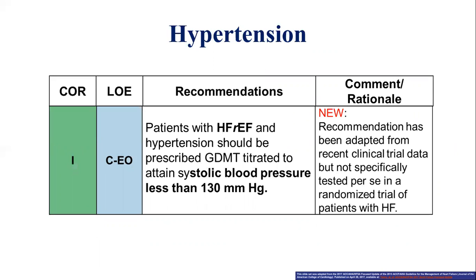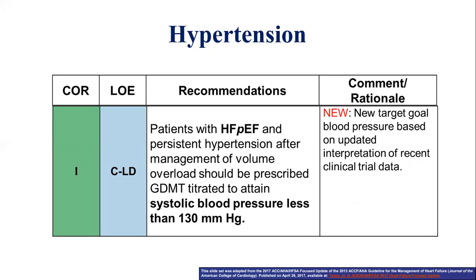Hypertension is one of the common comorbidities of heart failure patients. The guideline recommends that patients with HFrEF and hypertension should be prescribed guideline-directed medical treatment targeting systolic blood pressure less than 130 mmHg. Similarly, patients with heart failure with preserved ejection fraction who have hypertension should also target a systolic blood pressure less than 130 mmHg. The rule of thumb is to keep systolic blood pressure less than 130 mmHg.